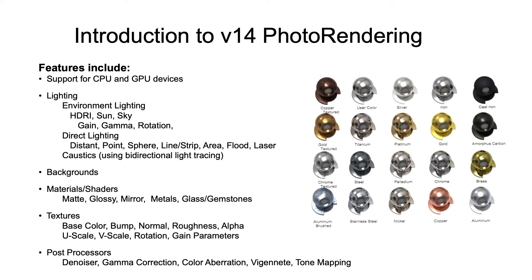Some of the more prominent new features introduced with the version 14 rendering include support for CPU and GPU devices. If you have a new ARM M1 Mac, those GPUs are now leveraged into your rendering. Additionally, lighting has been updated — we support HDRI, sun, and sky with options to control gain, gamma, and rotation.